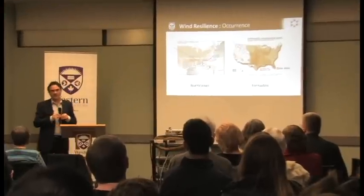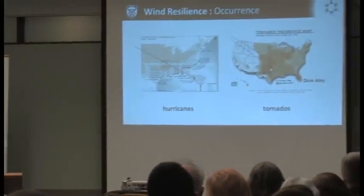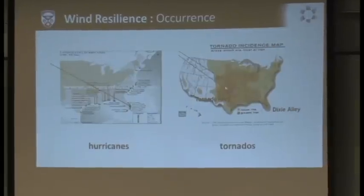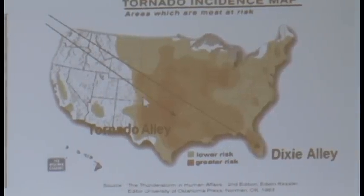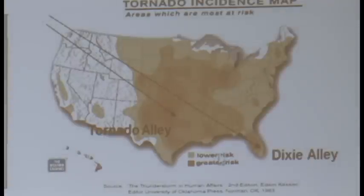Regarding occurrence: hurricanes really like coastal regions, going anywhere from Texas to the Gulf to Florida, and lately they've been migrating more toward the northeast — we had an example a couple of weeks ago that hit New York and New Jersey, which is much further north than their normal trajectories. On the tornado side, the well-known Tornado Alley is situated in mid-America, where dry and cold air coming over the Rockies collides with hot, moist air from the Gulf.